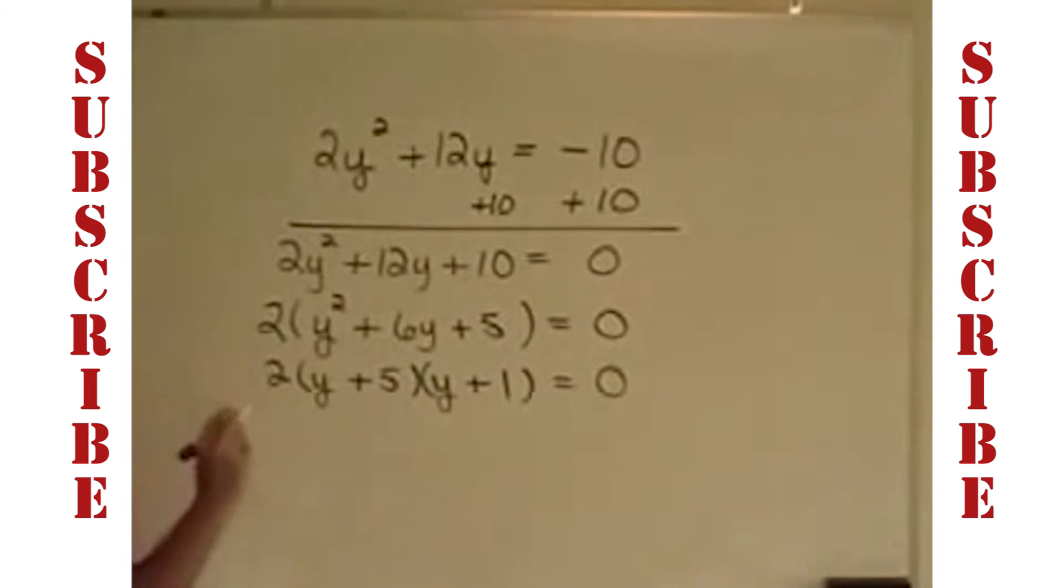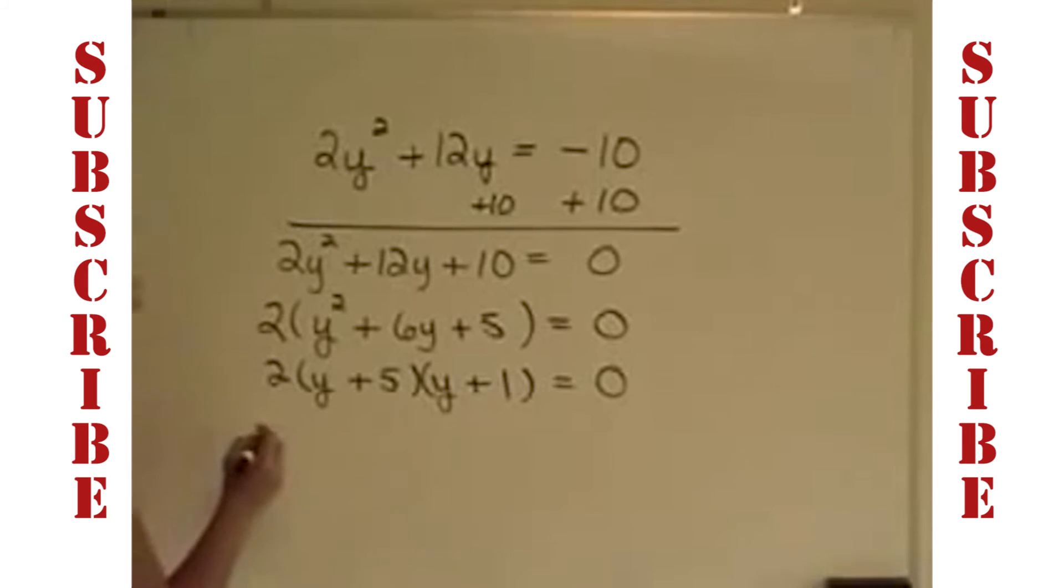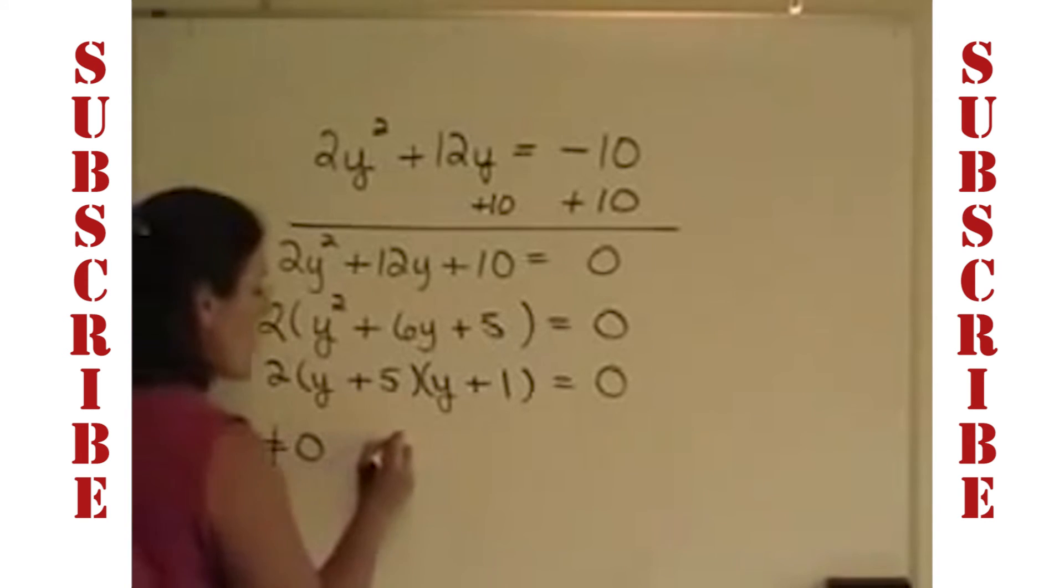The zero product rule says to take each factor. Now there are 3 of them here, a 2, y plus 5, and y plus 1. It says take each factor and set it equal to 0. Well, if I were to set 2 equal to 0, number 1, it's meaningless. It's not a true statement. And number 2, it does not allow me to solve for one of the variables. I don't need to use that as part of my process of solving this equation.